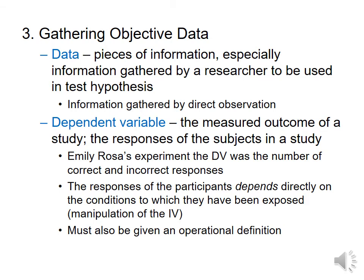As you're doing your research, you're going to start to gather your data. Data is going to be generated by looking at your dependent variable. Your dependent variable is going to exist in both your control and your experimental group. Your independent variable is only in the experimental group, and you use your dependent variable to measure it. In your control group, you will still have your dependent variable because you will still be getting a baseline measurement. Your dependent variable must also have an operational definition.